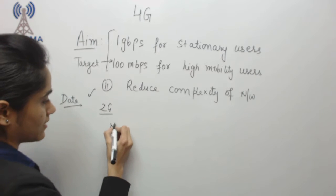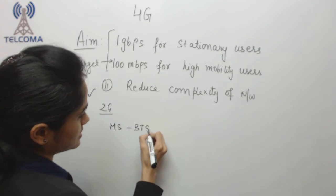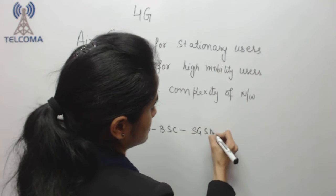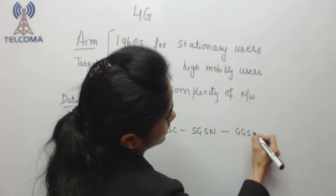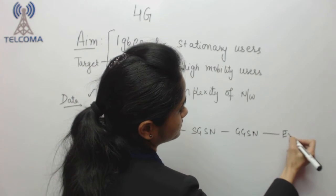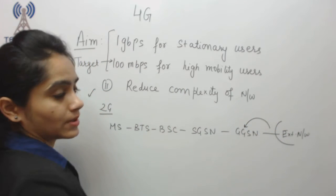So if you talk about 2G, we have mobile station connected to BTS, then we have BSC, after that we have SGSN, we have GGSN, and here we have external network. That means if I have the data, I have to pass through all of these entities.